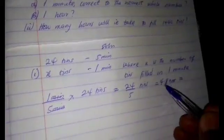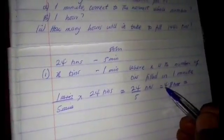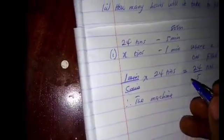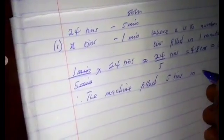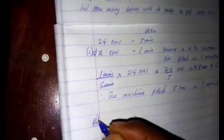But the question asks us to correct our answer to the nearest whole number. So 4.8, because this 8 is more than 5, we add 1 to the 4 making 5. So 5 tins. The machine fills 5 tins in 1 minute. That's part alpha.